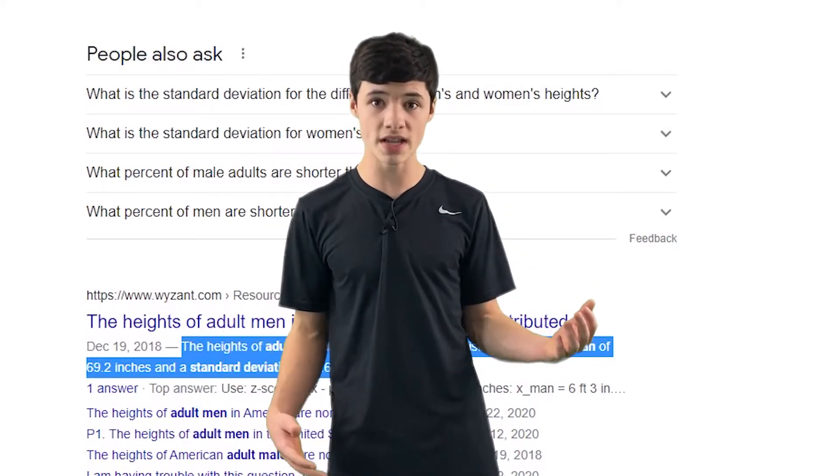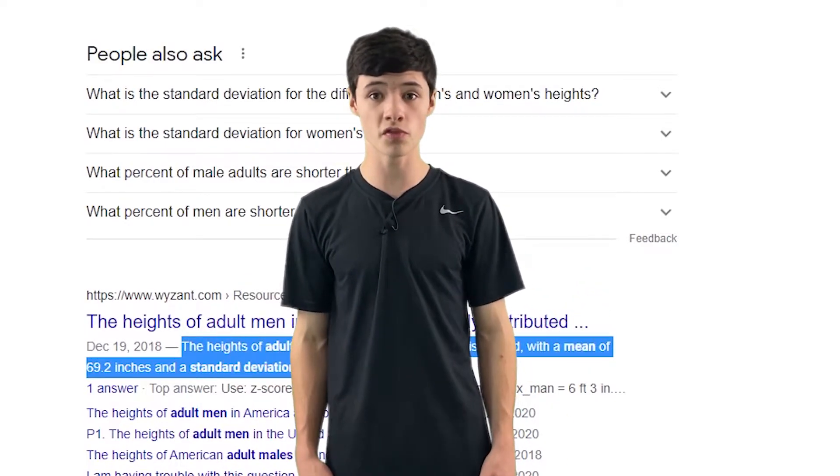There are also plenty of other ways you can use normal distributions to improve your games. For example, if you have a weapon that does varying amounts of damage, set it up to use a normal distribution. And the same thing goes for something like health. If you want it to vary, use a normal distribution.